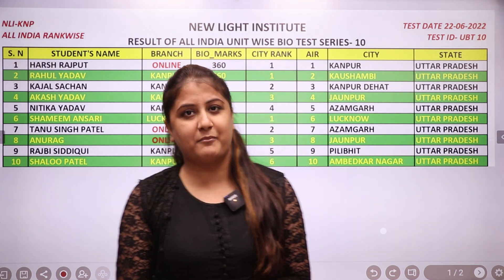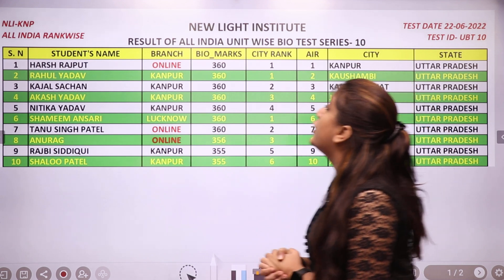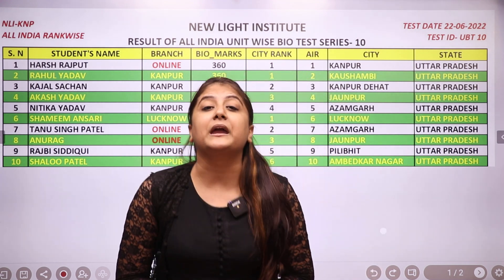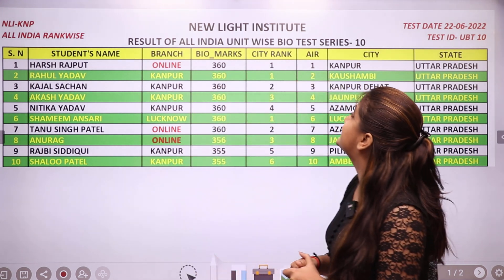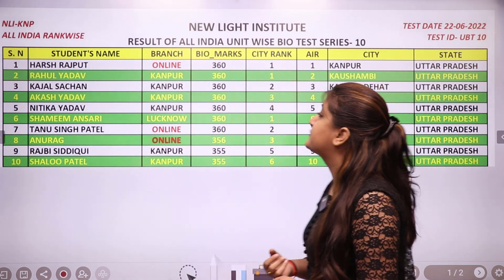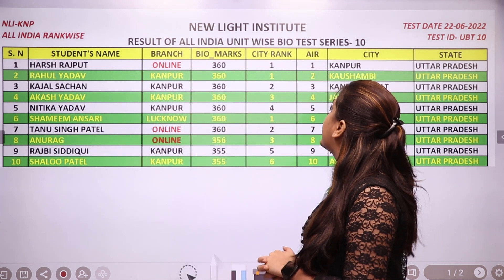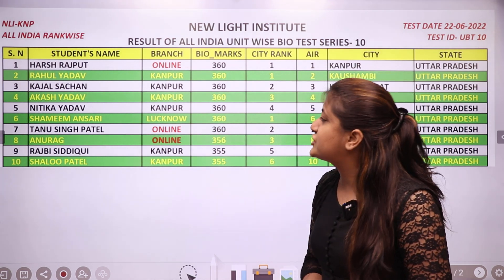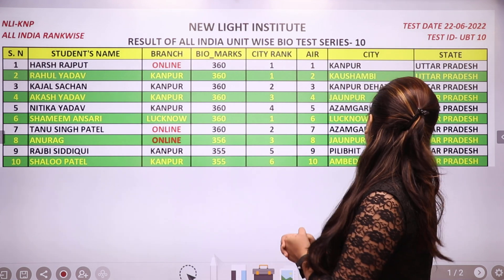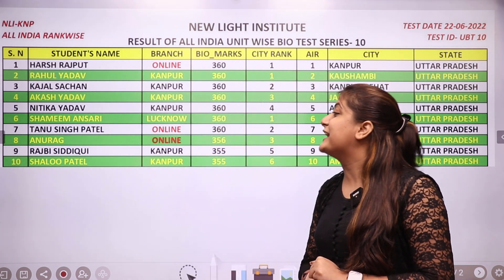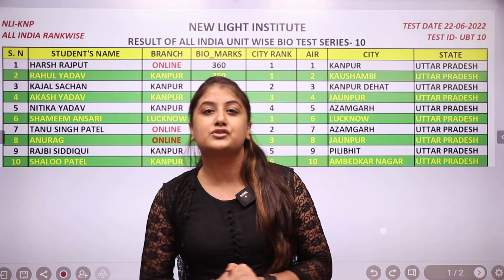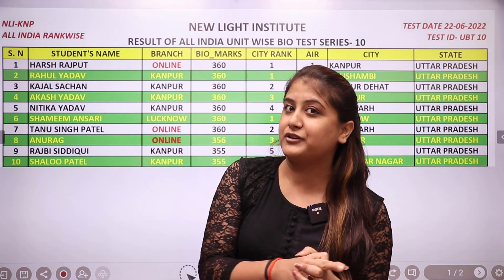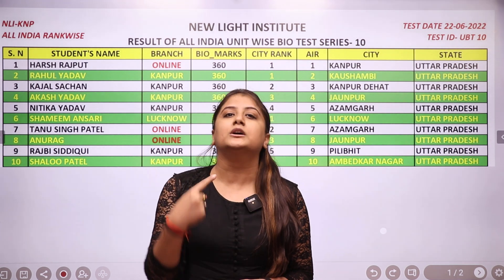Now let's see who are our Top 10 Performers in the test given yesterday. AIR 1 has been scored by Harsh Rajput, who is from Uttar Pradesh — a big congratulations to you, Harsh! AIR 2 goes to Rahul Yadav. AIR 3 is Kajal Sachan. AIR 4 goes to Akash Yadav. AIR 5 is Nitika Yadav. AIR 6 is Shamim Ansari. AIR 7 is Tanu Singh Patel. AIR 8 goes to Anurag. AIR 9 goes to Raaz B. Siddiqi. And AIR 10 goes to Shalu Patel. A big congratulations to each one of you! And if your name is not here, work harder next time.